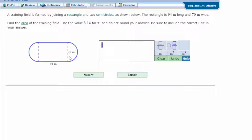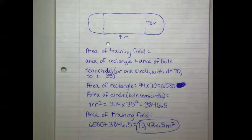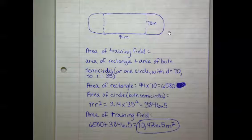A training field is formed by joining a rectangle and two semicircles, as shown below. The rectangle is 94 meters long and 70 meters wide. Find the area of the training field. Use the value 3.14 for π and do not round your answer. Be sure to include the correct unit in your answer.